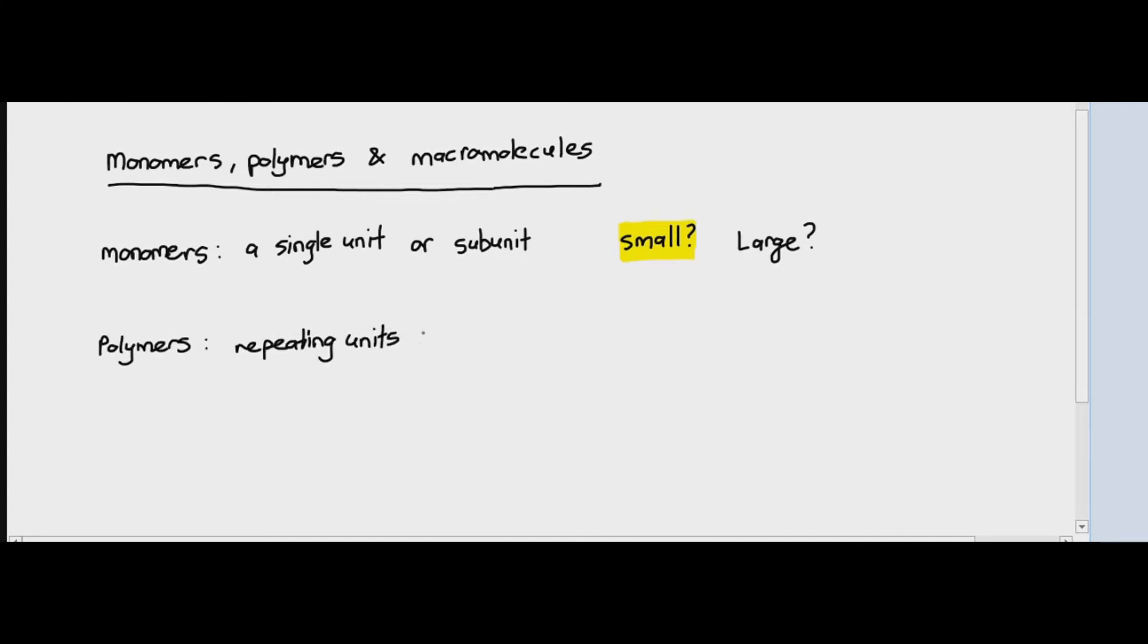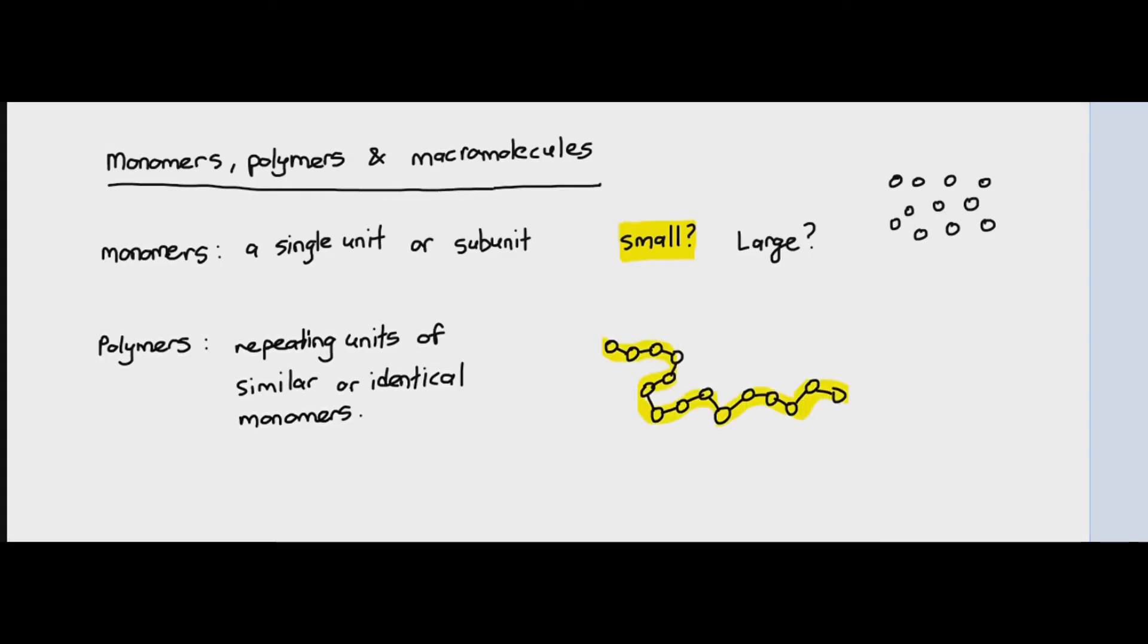Polymers themselves are basically repeating units of similar or identical monomers. So when you have monomers, which are just single units, and when you join the single units together, you get something called a polymer. And I've drawn out something there for you. On the top right, you can just basically see those little circles represent monomers. And at the bottom, you can see those little circles joined up with chemical bonds. And when you join it up with a chemical bond, that is considered a polymer.